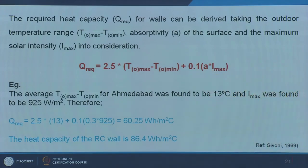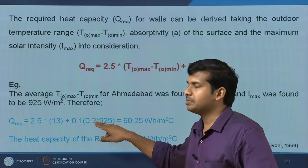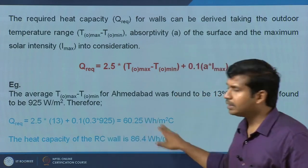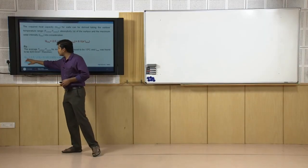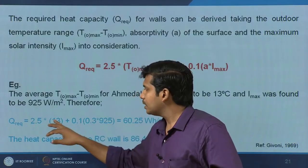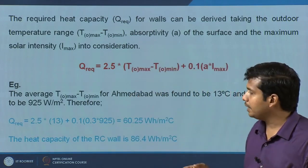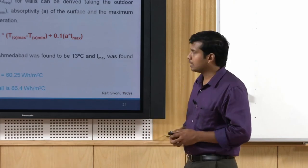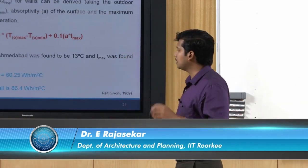If instead of a white-painted surface with 0.3 absorption coefficient, we substitute a matte black surface with 0.85 or 0.9 absorption, Q required goes up considerably — a dark surface requires more thermal capacity than a light surface. As diurnal delta T increases, Q required goes up; as solar intensity increases, required heat capacity also goes up. This equation is not precisely validated for the Indian context but gives a fair idea of where thermal capacity is needed and to what proportion.